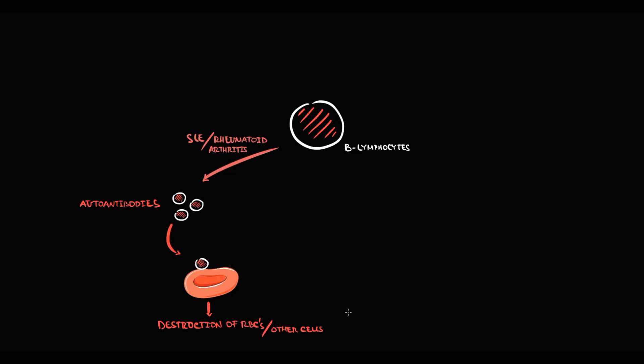The second scenario is lymphoproliferative disorders. Sometimes B-lymphocytes become basically immortal. This immortality is caused by a mutation that inhibits apoptosis, which is the case in chronic lymphocytic leukemia or in B-cell lymphomas.